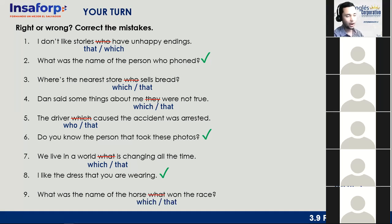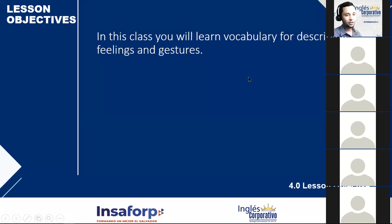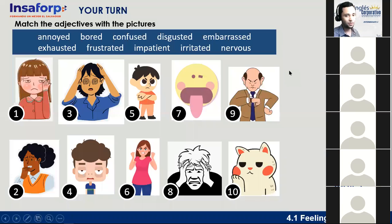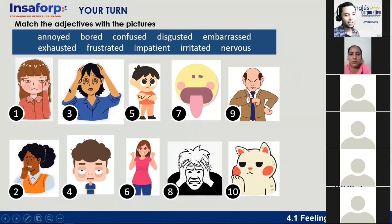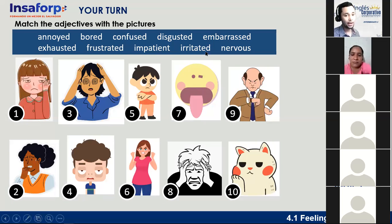Next lesson objective: in this class you will learn vocabulary for describing feelings and gestures. Some vocabulary for you — match the adjectives with the pictures. The adjectives are: annoyed, bored, confused, disgusted, embarrassed, exhausted, frustrated, impatient, irritated, and nervous. What adjective goes with picture number one?